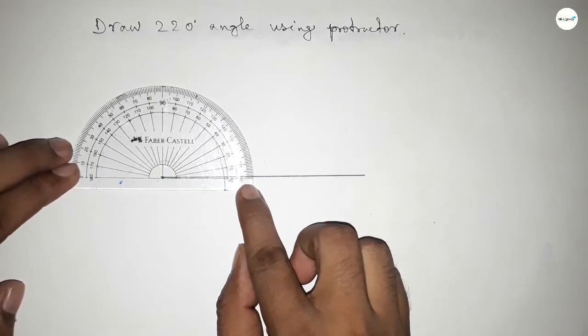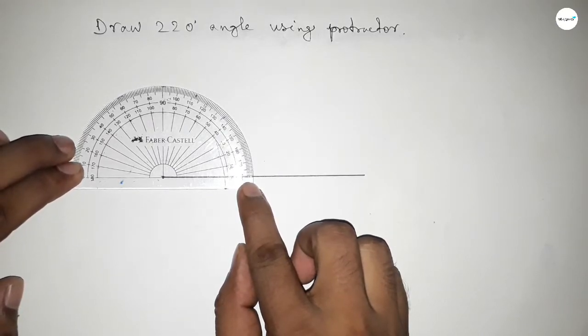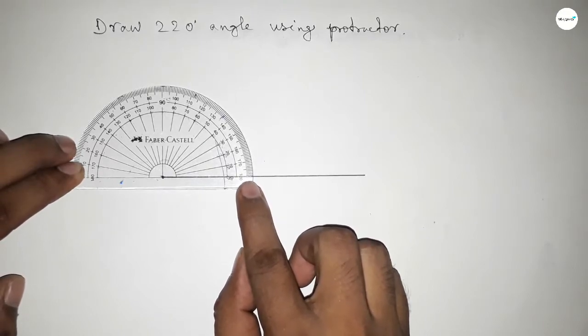Now putting the protractor on the line perfectly and counting the angles.